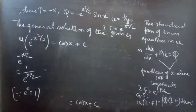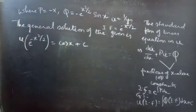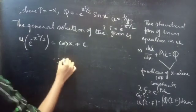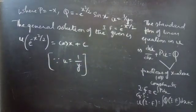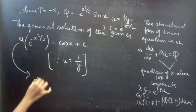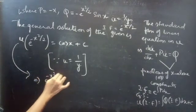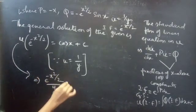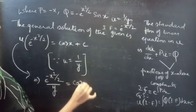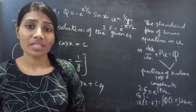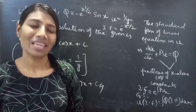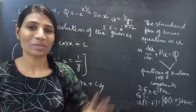Now we replace u with 1/y, since u = 1/y. The above equation becomes e^(-x²/2)/y = cos x + C, which is the required solution. So we have solved a problem from differential equations in this video. Hope you understand — we'll see in the next video. Bye bye.